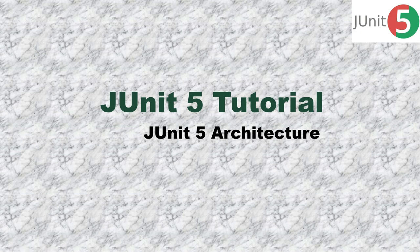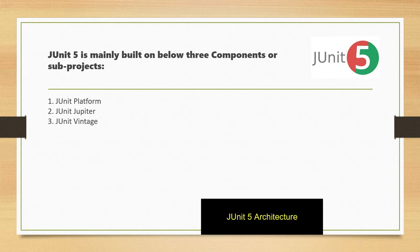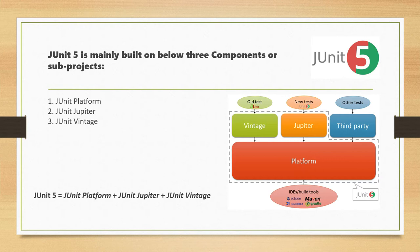Welcome to KK Java Tutorials. In this video we will talk and learn about JUnit 5 architecture. JUnit 5 is mainly built on three components or projects: JUnit Platform, JUnit Jupiter, and JUnit Vintage. We can say that JUnit 5 equals JUnit Platform plus JUnit Jupiter plus JUnit Vintage. Let's try to understand these three components one by one.